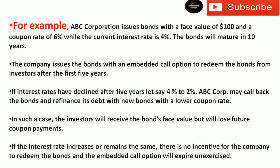ABC Corporation issues bonds with a face value of $100 and a coupon rate of 6%, while the current interest rate is 4% annually. The bonds will mature in 10 years. However, the company issues the bonds with an embedded call option to redeem them from investors after the first five years.